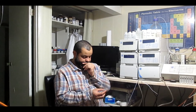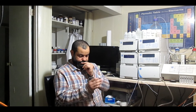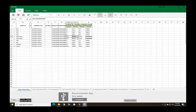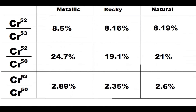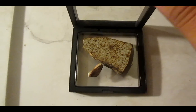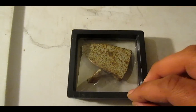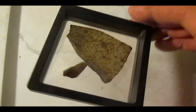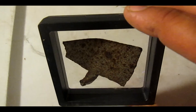Another way to confirm authenticity is to look at the chromium isotopic ratio and compare it with natural abundance. The difference is small — about 4% between chromium-52 and chromium-50 — but it is significant enough to determine that these meteorites are real. Now that we know that, let's take a look at the isotopic ratios for other elements and try to date these space rocks.